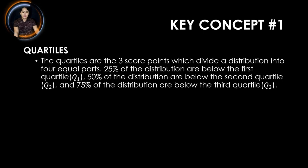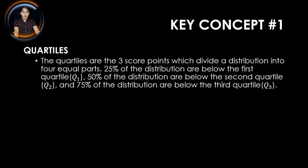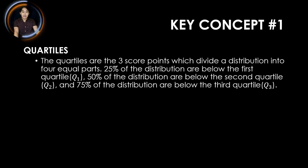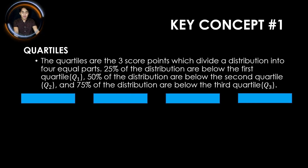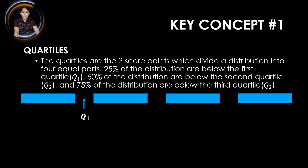Our first key concept is quartiles. The quartiles are the three score points which divide a distribution into four equal parts. 25% of the distribution is below the first quartile, 50% is below the second quartile, and 75% is below the third quartile. To illustrate quartiles, we have four blocks representing the whole, divided into four equal parts. Between the first and second blocks is the first quartile, representing 25% of the distribution.